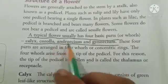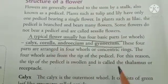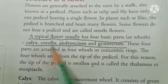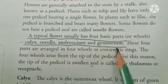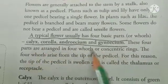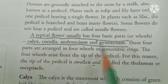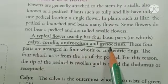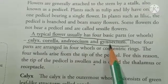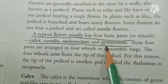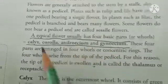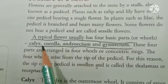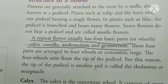A typical flower will have four basic parts or whorls: Calyx, Corolla, Androecium and Gynoecium. These are the four whorls of a flower. The Androecium and Gynoecium are known as the essential whorls of the flower since they play an important role in reproduction, whereas Calyx and Corolla are known as the non-essential whorls.